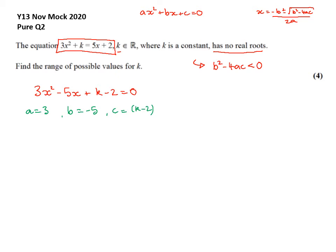So putting that into my information given that B squared minus 4AC is less than zero. So just plugging that in, minus 5 squared minus 4 times 3 times K minus 2 is less than zero. So 25 minus 12K plus 24 is less than zero.